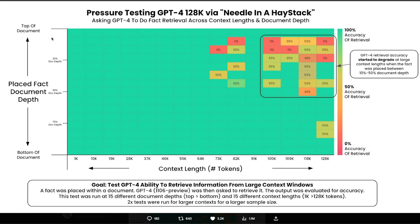The y-axis shows where the fact is placed relative to the start of the document — the bottom is the beginning and moving up represents deeper into the document. He placed a certain fact at different depths: for example, 25% depth means it's in the top 25% of the document, towards the end of the context window. From this experiment, it seems like up to 64,000 tokens, irrespective of wherever the fact is placed, the model is able to retrieve that information correctly. However, when you go beyond 64,000 tokens it gets tricky — if the fact is at the beginning you still get decent performance, but if the fact is placed in the last 50th percentile, retrieval for larger context windows is pretty bad.